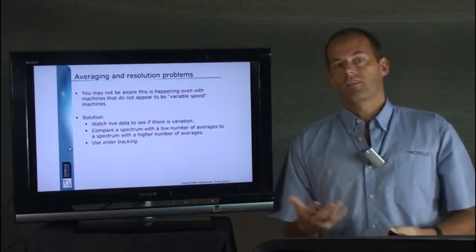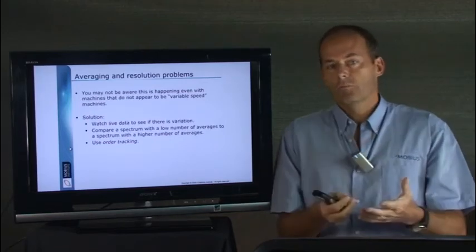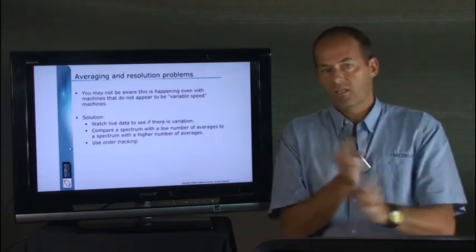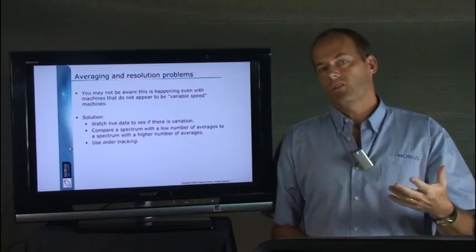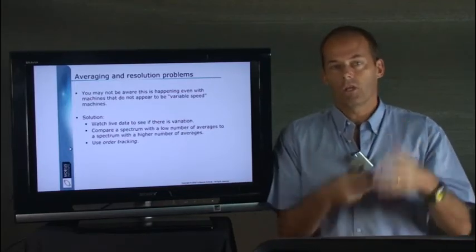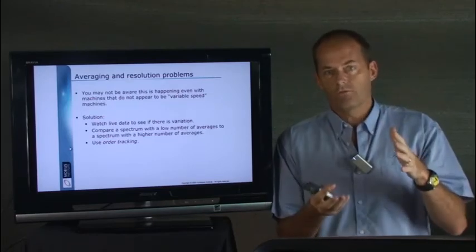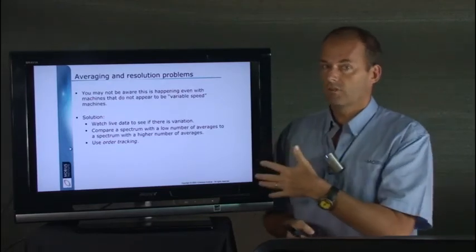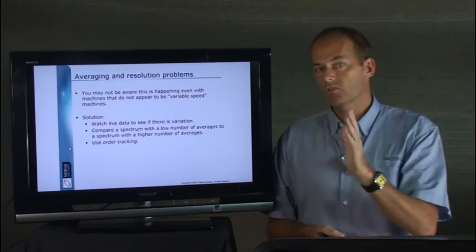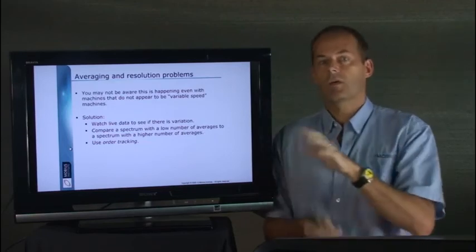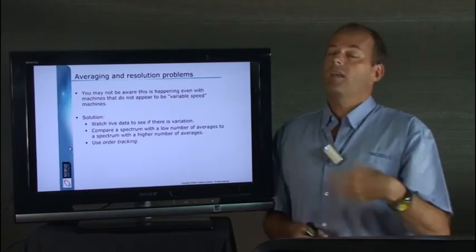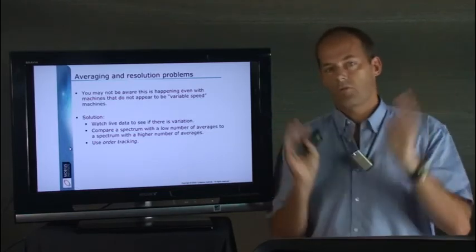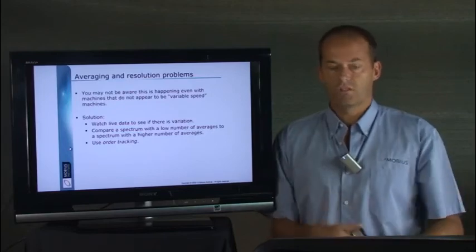You may not be aware that this is happening. I mean, with a variable speed process where the speed is varying, it should be something you're aware of. It may be something that you think, look, it'll be fine. You know, it seems fairly constant when I'm testing it, but this is what's happening. If it's varying very much, particularly those high frequencies, remember, they'll smear and they will drop down. They may be repeatable, but they just don't represent anything about the true condition of the machine.